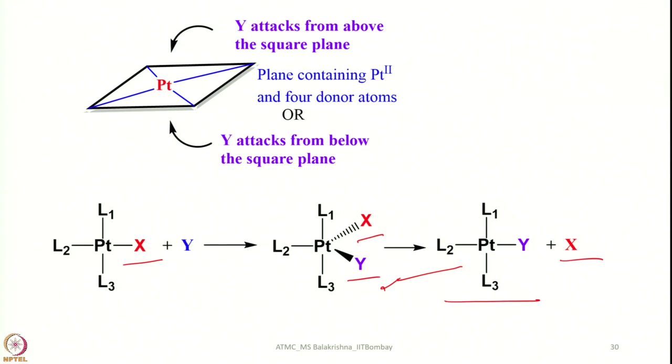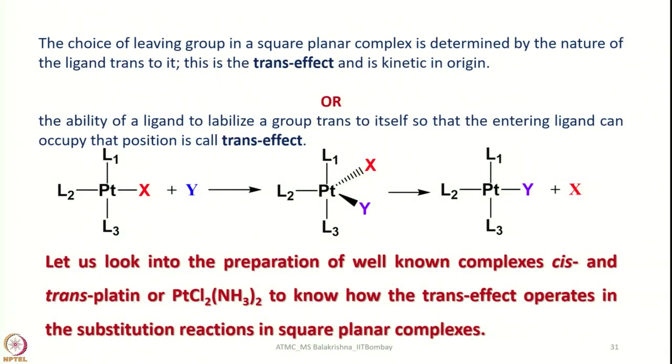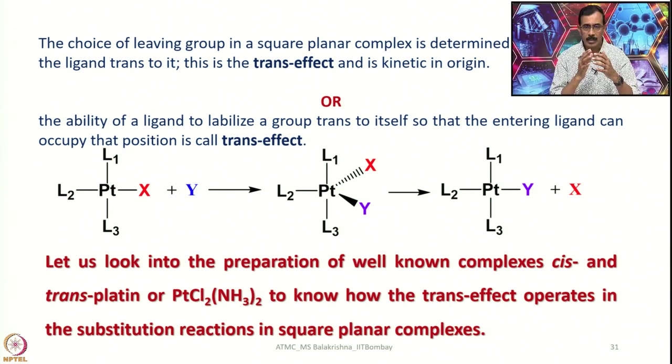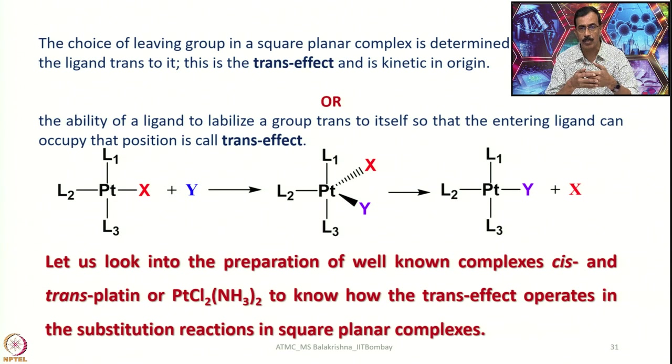This is the appropriate time to introduce the concept of the trans effect, which is very important when discussing substitution reactions of square planar complexes. The choice of leaving group in a square planar complex is determined by the nature of the ligand trans to it. This is the trans effect, and it is kinetic in origin. In other words, it is the ability of a ligand to labilize a group trans to itself, so that the entering ligand can occupy that position — this is called the trans effect.